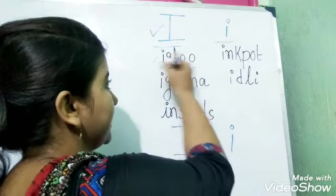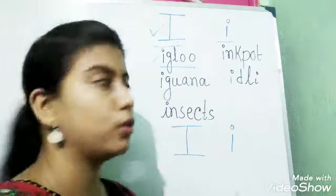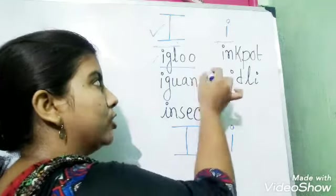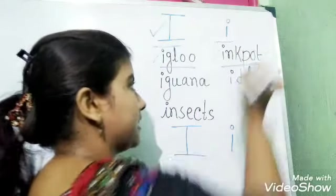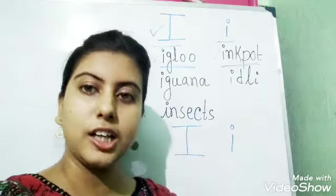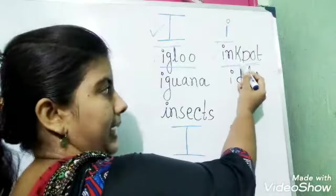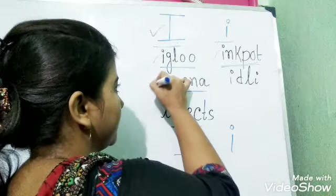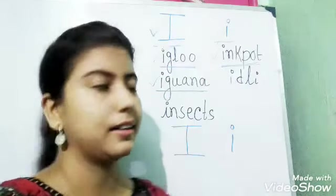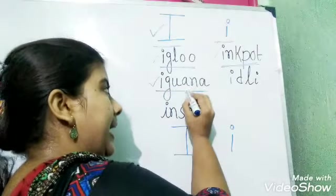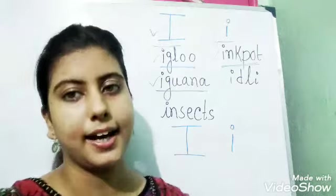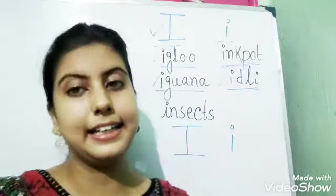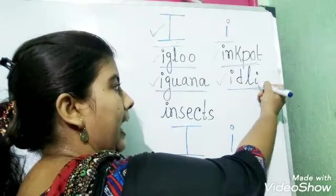The first word is igloo. I-G-L-O-O. Igloo. The next word is ink pot. I-N-K-P-O-T. Ink pot. Then the third one is iguana. I-G-U-A-N-A. Iguana. And the fourth word is idli. I-D-L-I. Idli.